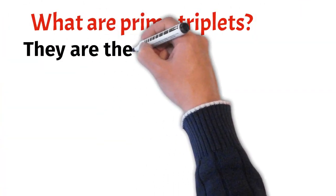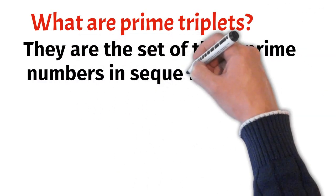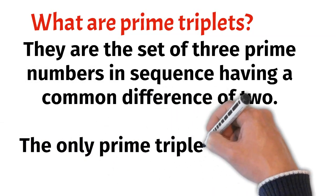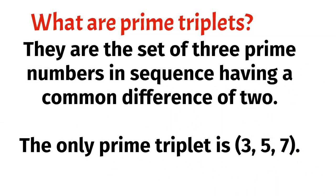What are prime triplets? They are the set of 3 prime numbers in sequence having a common difference of 2. The only prime triplet is 3, 5, 7.